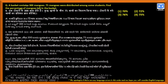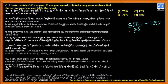A basket contains 300 mangoes. 75 mangoes were distributed among some students. Find the percentage of mangoes left in the box. Total 300 mangoes in the bag is 100 percent, and 75 mangoes were distributed to some students.